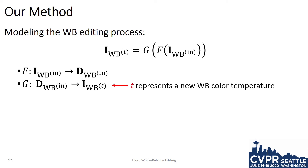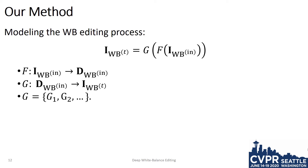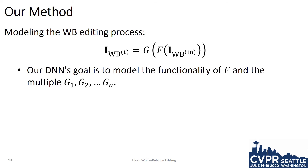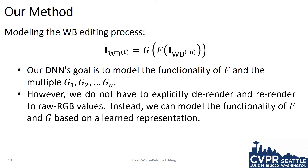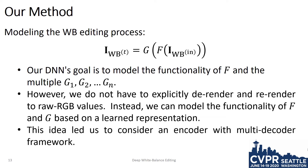Here, we use the superscript T to denote the color temperature of the white balance setting. Note that we will have many G functions, each representing one of the different white balance settings. Our DNN's goal is to model the functionality of the functions F and the multiple functions G. We do not, however, have to explicitly de-render and re-render our input image to raw RGB values. Instead, we can model the functionality of F and G based on a learned representation.